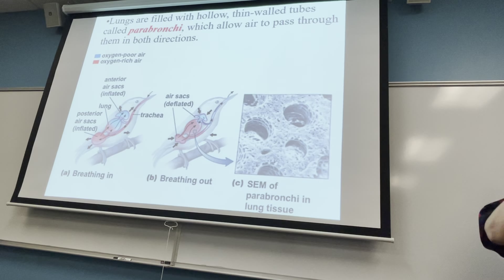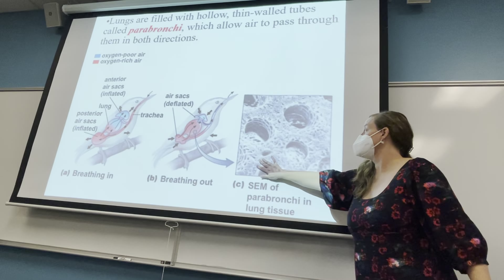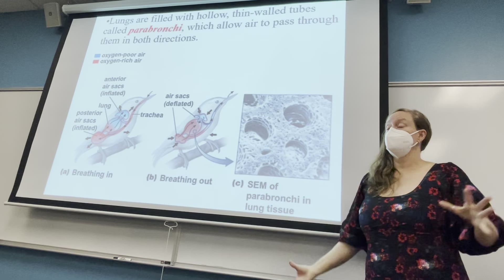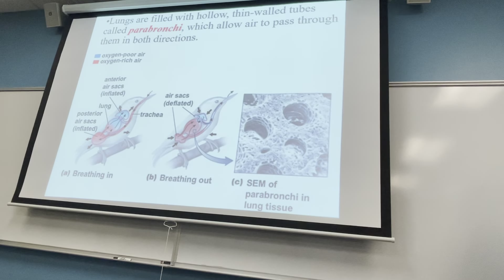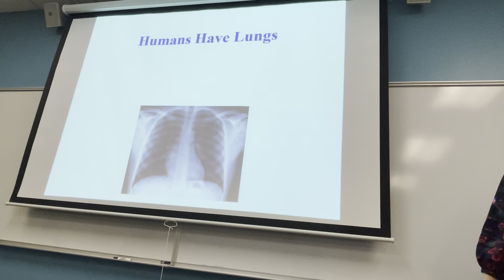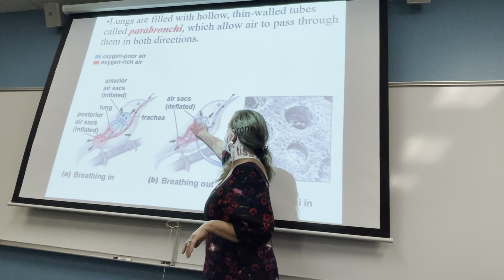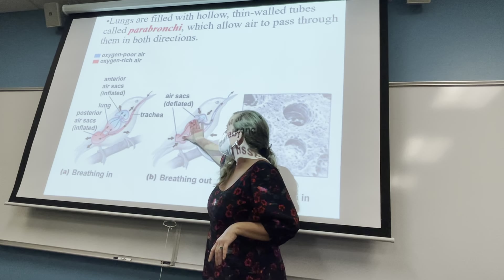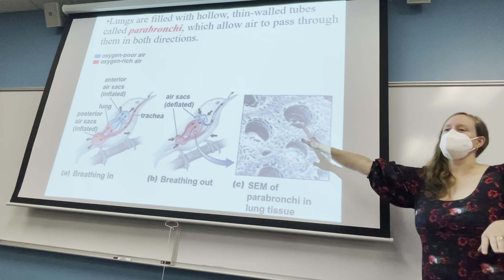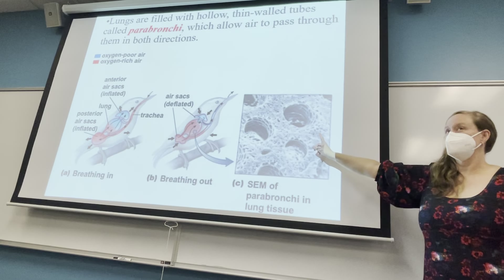Bird lungs also have structures called parabronchi that look like a sponge — full of holes providing a lot of surface area — allowing for maximum infusion of oxygen. Looking at a bird's anatomy, you can see the lungs and extra air sacs take up a large amount of real estate in the body. Of course, the circulatory system and digestive system also take up significant space — you need both respiration and digestion to get the energy to fly.